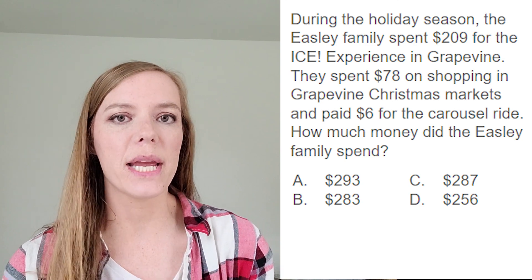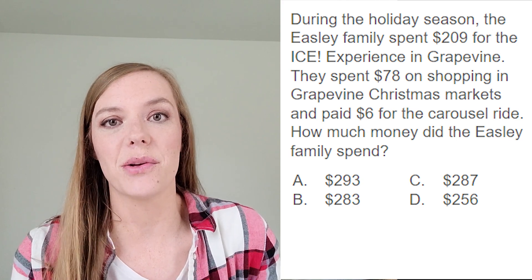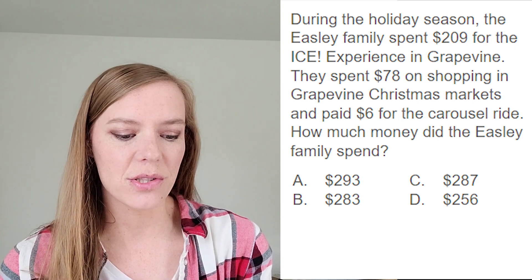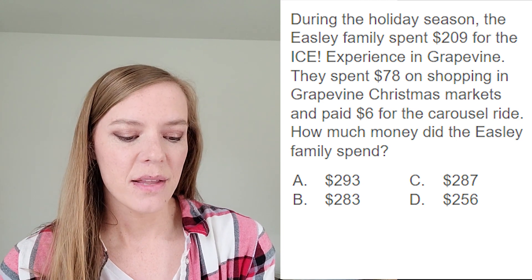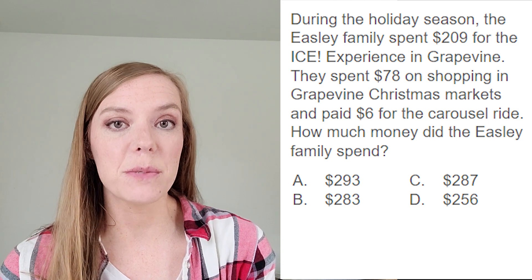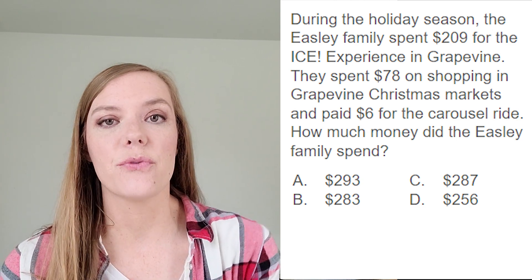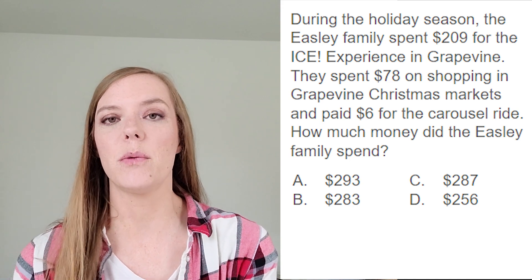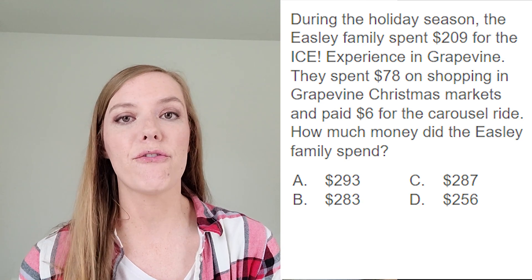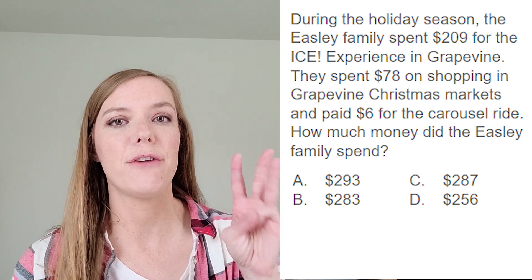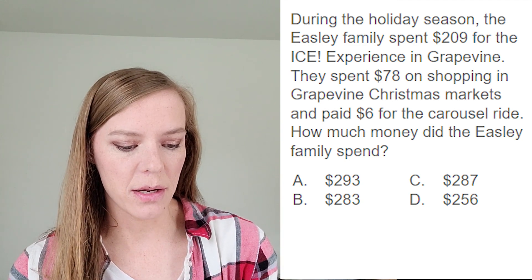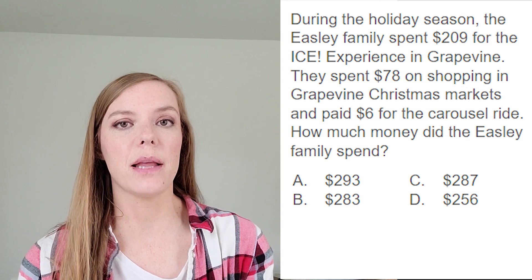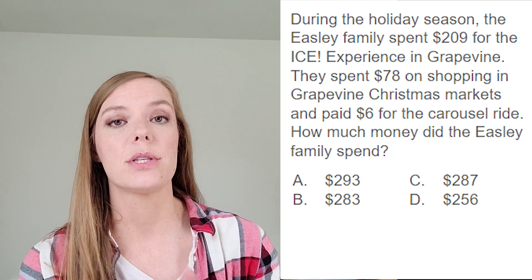I like to read the problem once before I even start working with the numbers — I just want to understand what's going on. So let's read it together. During the holiday season, the Easley family spent $209 for the ice experience in Grapevine. They spent $78 on shopping in Grapevine Christmas Market and paid $6 for the carousel ride. How much money did the Easley family spend? Before I start working with those numbers, I'm thinking about how they spent money three different ways, and the question is asking how much money did they spend. So it sounds like we're going to be combining all of those together to get one big total.